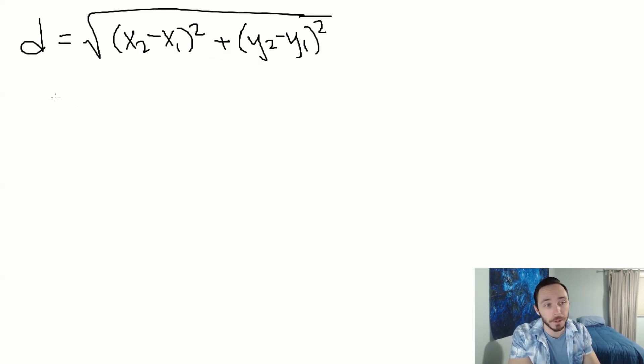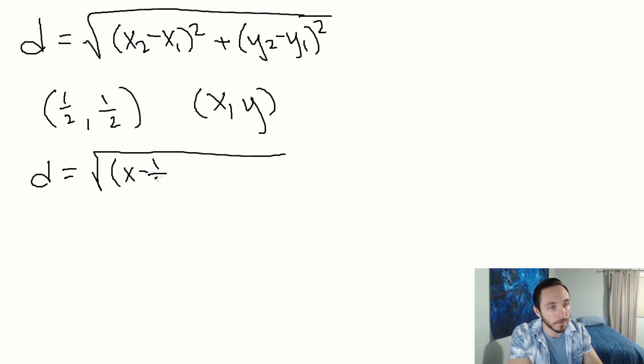We want to ensure that this distance is less than a half. What are the ordered pairs? We have the center at half comma half, and our dart's position which is totally random at x and y. Let's plug these into the distance formula. The distance equals the square root of x minus a half squared plus y minus a half squared. We want to make sure this is no more than a half.